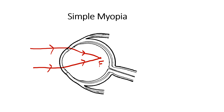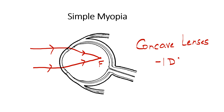The treatment of simple myopia is to give a lens so that the eye power is decreased — specifically, minus lenses or concave lenses. So the prescription for simple myopia looks something like minus one diopter sphere, minus two diopter sphere, or minus three diopter sphere and so on. A minus sphere or concave sphere is the glass prescription for simple myopia.